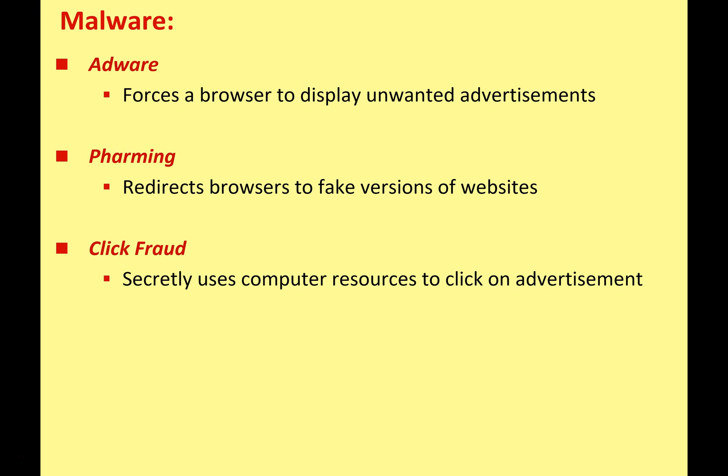Click fraud secretly uses your computer's resources to click on advertisements. As you know, the main way people make money online is through advertising, and advertisers pay for every click on their ads. So if you write malicious software that, once on a user's computer, activates their browser and clicks on advertisements many times in the background — without the user being aware — the people behind this make a lot of money from your computer.